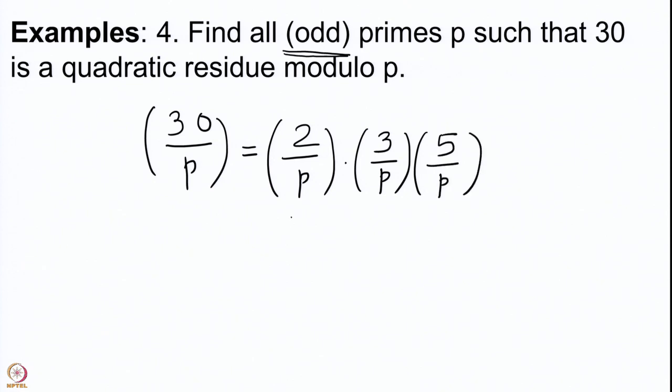We keep 'odd' in brackets because for 30 to be a square modulo p, we need gcd(p, 30) = 1, so p = 2 will not arise. Such primes will automatically be odd. We compute the Legendre symbol (30/p), and since it is multiplicative, this equals (2/p)·(15/p), which gives us (3/p)·(5/p).